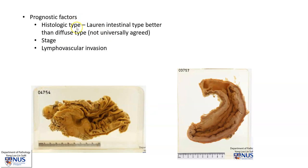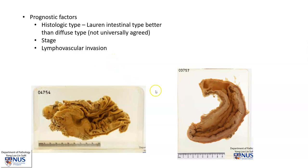Prognostically, the histologic type is of importance. Lauren intestinal type tends to have a better prognosis than the diffuse type, though this is not universally agreed on. The stage is the most important prognostic factor, which includes the depth of invasion and the presence of lymph node involvement as well as distant metastases. Lymphovascular invasion is also an important prognostic factor.